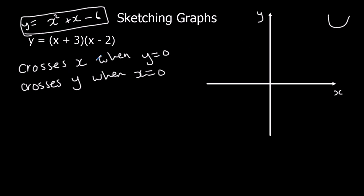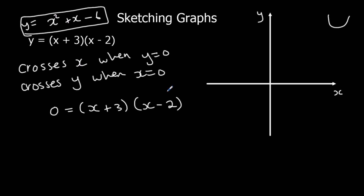Crosses x when y equals 0. So if y is 0, we have x plus 3 and x minus 2. This is already factorised, so we don't need to factorise it. We just read off the answers: x can be negative 3, or x can be 2. So it's going to cross at negative 3 and 2.